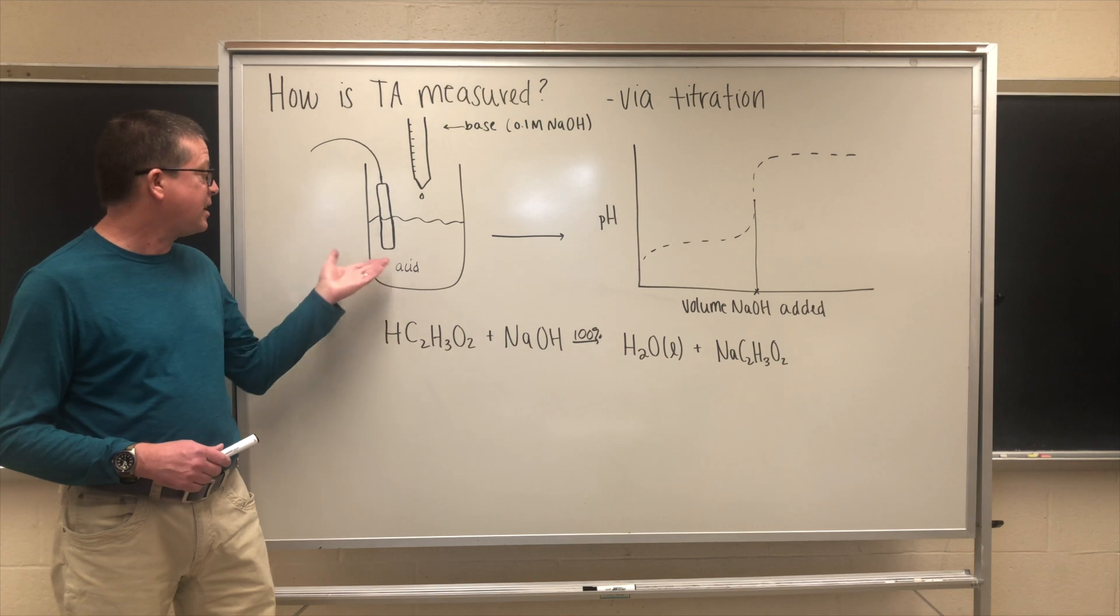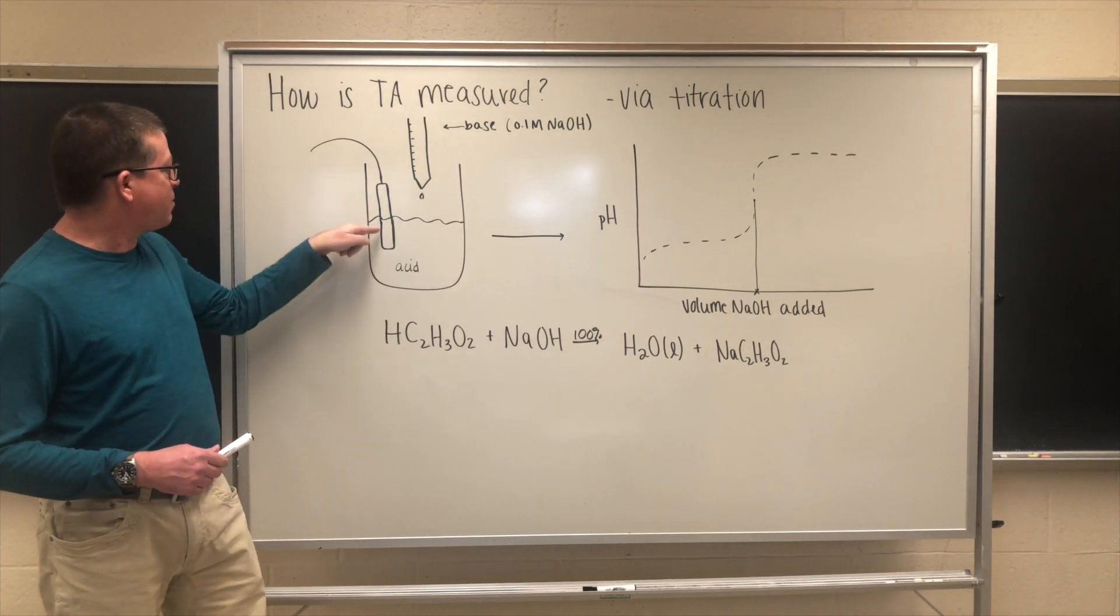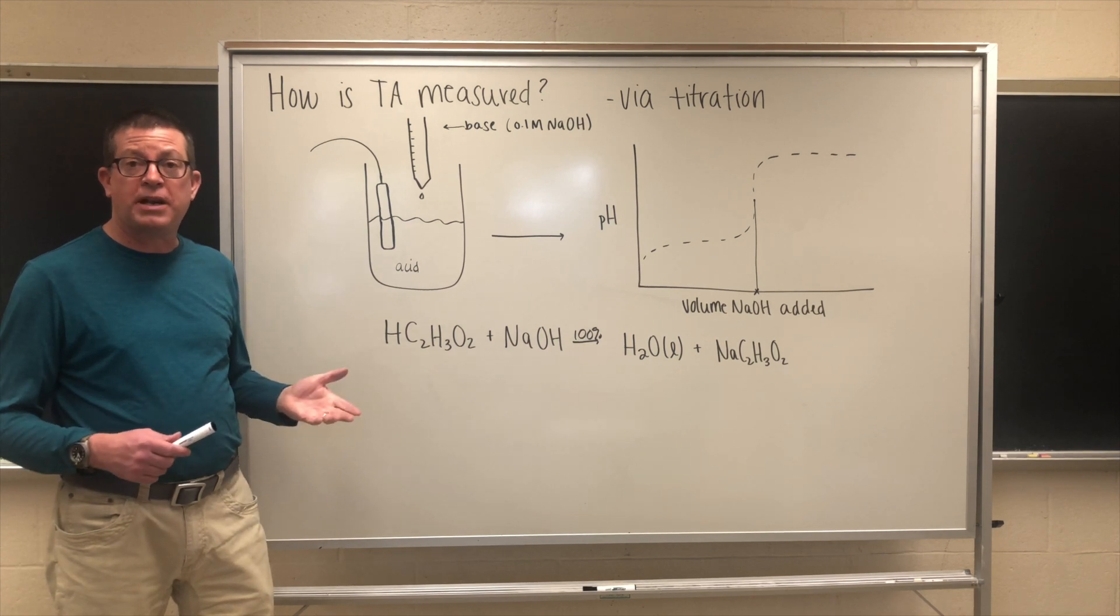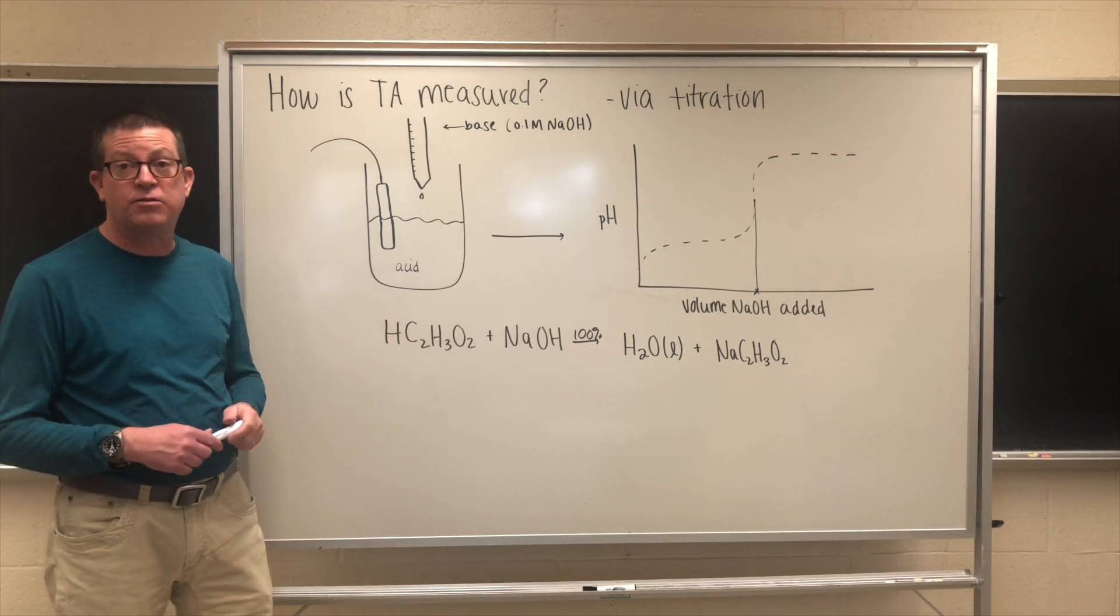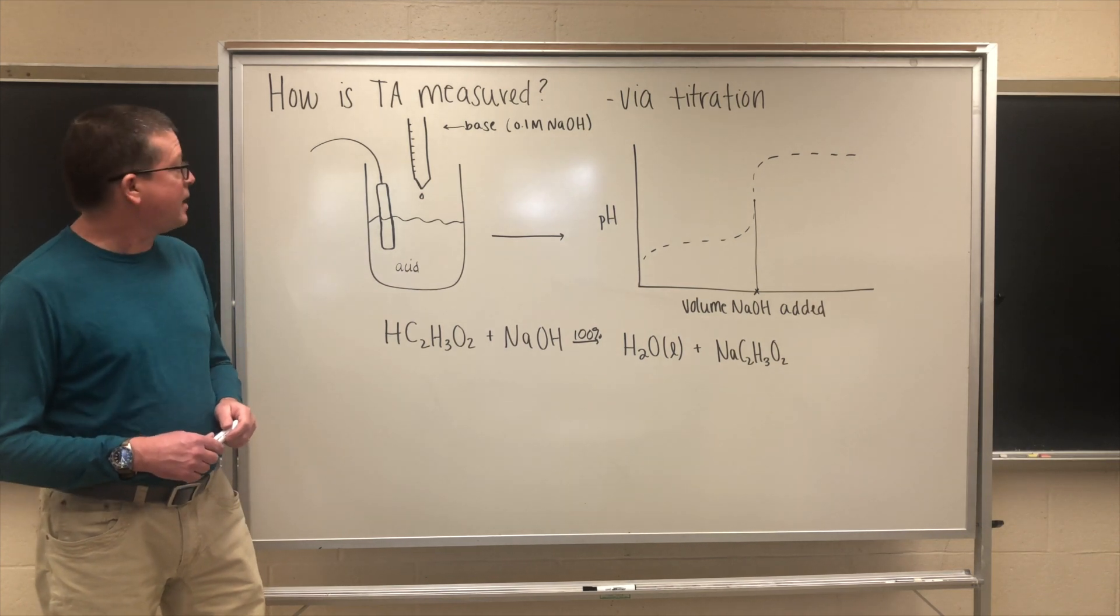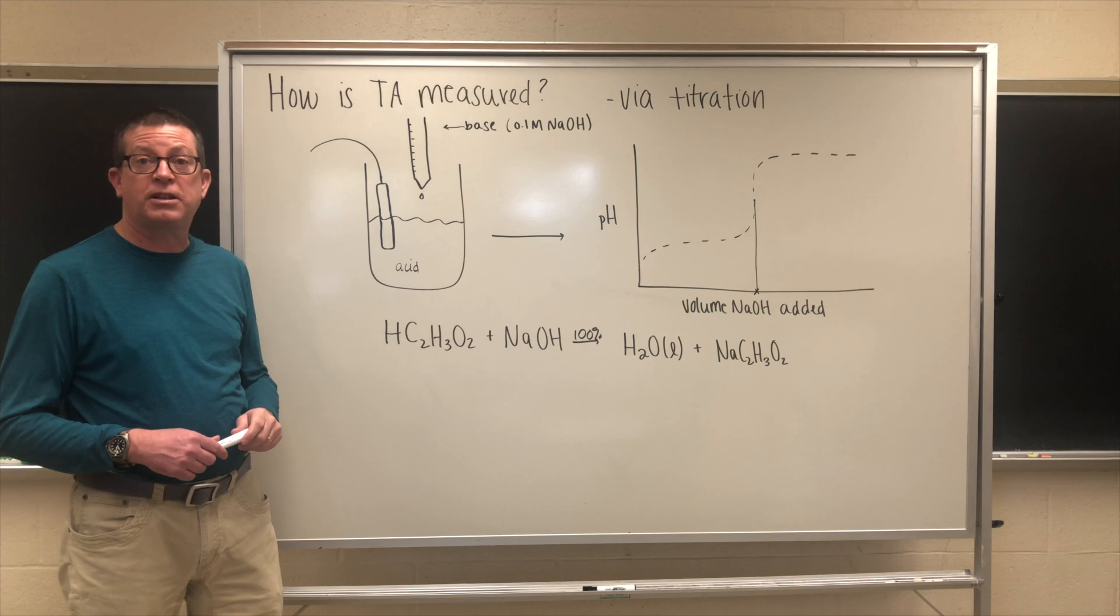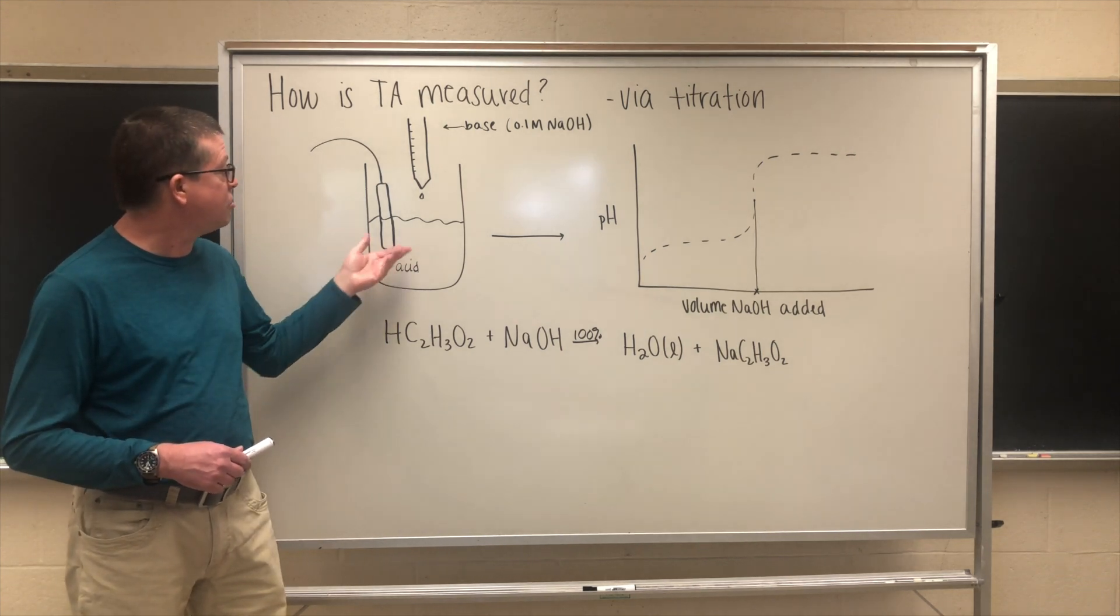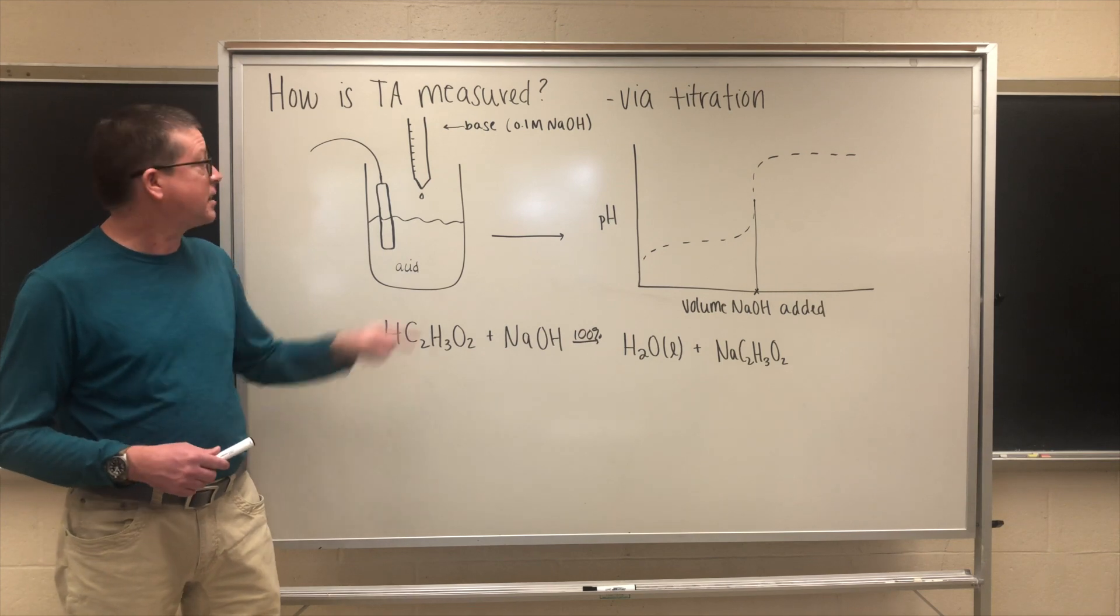We'd start out with a simple beaker and we'd put our kombucha in here, which contains the acid. We would place into that a pH electrode to measure the pH, which would be attached to a pH meter where we can read off the pH values as we go. Then we're going to use a device called a burette that's going to allow us to introduce the base into the solution so that it can react with the acid.